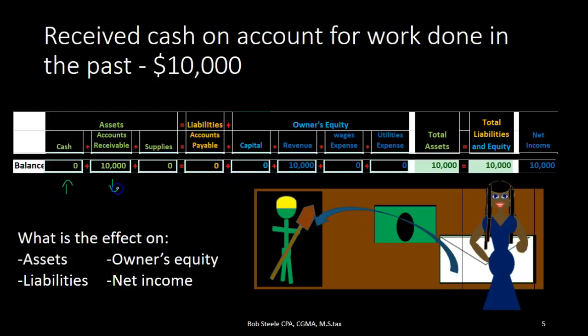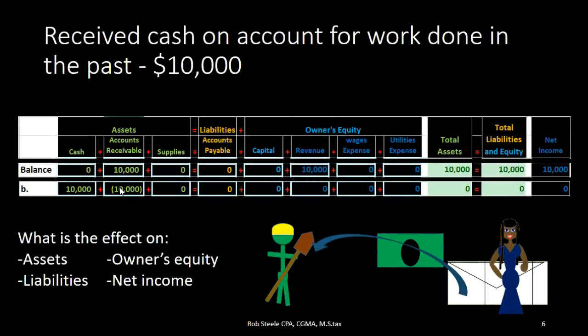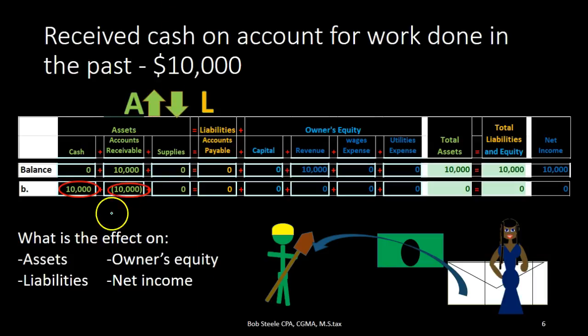So receivable is going to go down. Our transaction has cash going up, and the other side is the receivable going down. Assets are going up and then the receivable — which is another asset — is going down. That's a bit strange: assets went up, assets went down. In terms of the accounting equation, there's really no net effect because one asset went up and one asset went down.